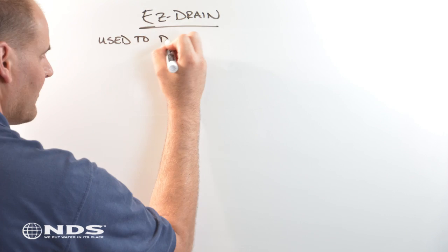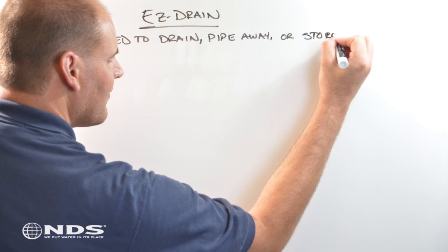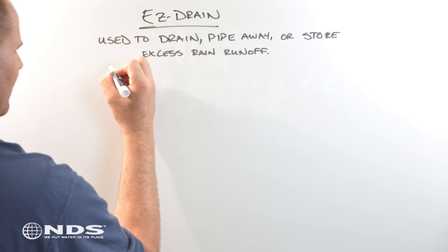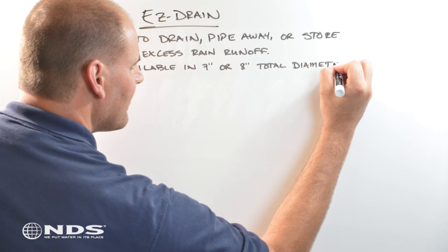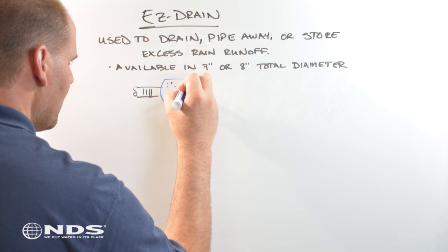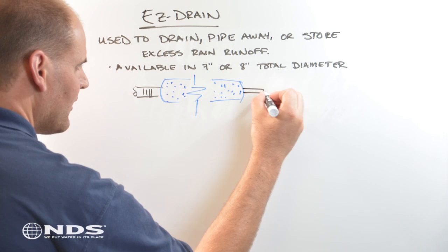Easy drain is a gravel free alternative to a traditional gravel French drain. Easy drain can be used to drain, pipe away, or even store excess rain runoff. Easy drain is available in two sizes, 7 inch or 8 inch total diameter.